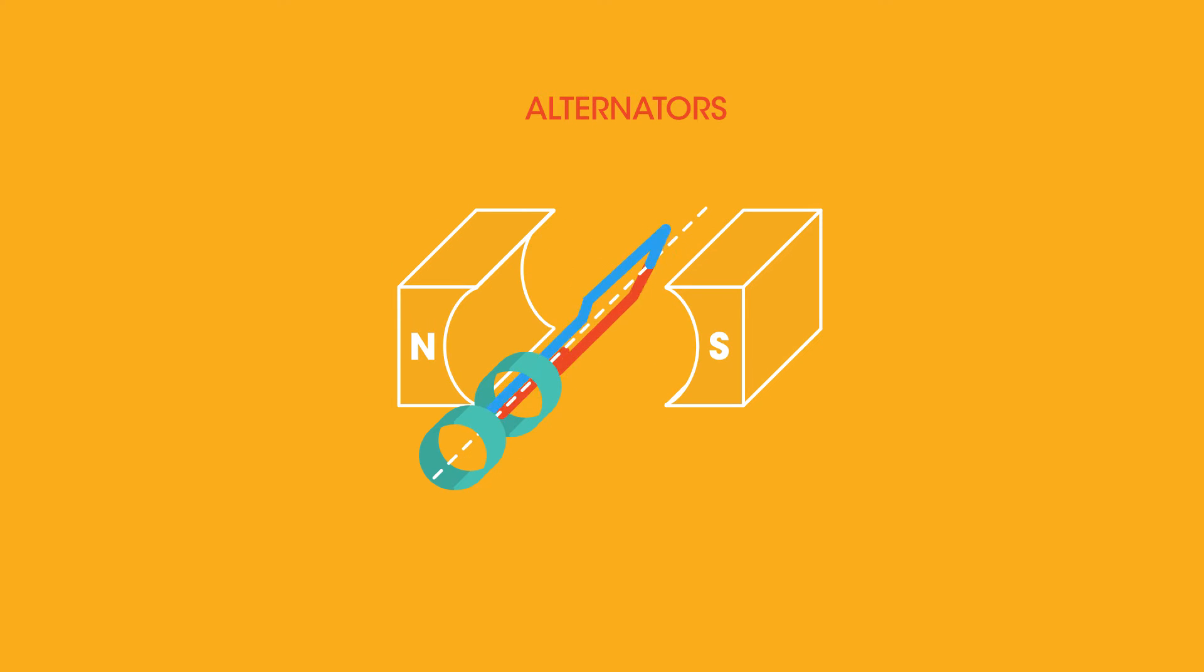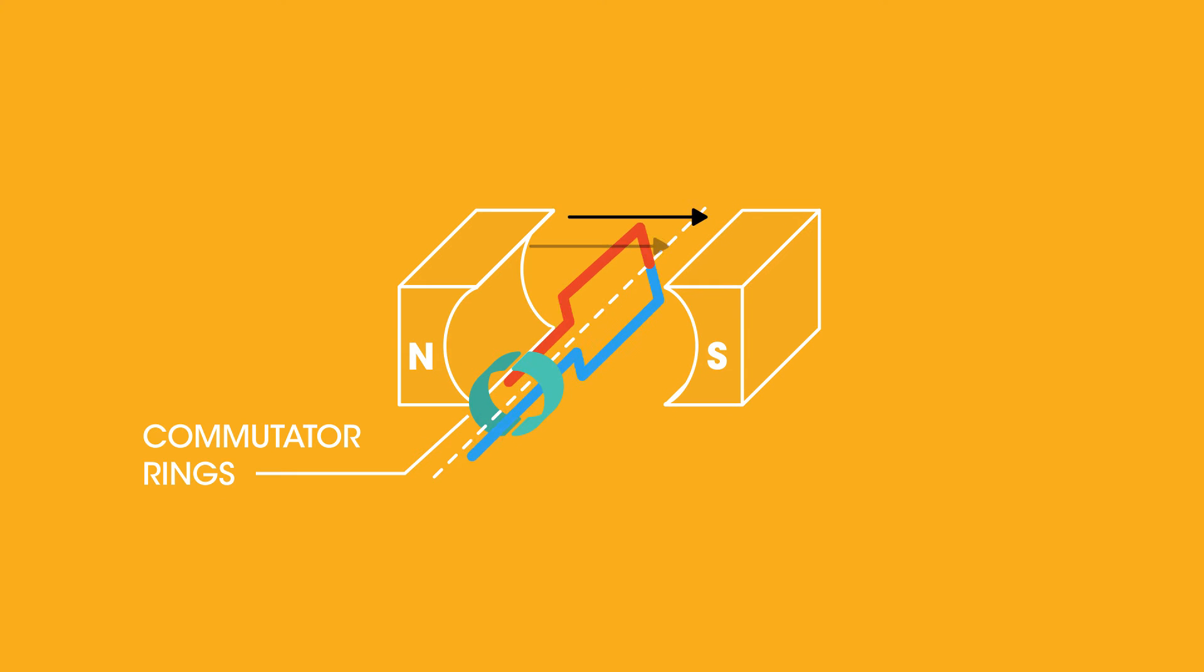Whether we induce an alternating or direct current is to do with these rings here, called commutator rings. This is an alternator because the wire coil is connected to the commutator rings that are complete, whereas seen now, there is one split ring commutator. This is a dynamo and so induces a direct current.